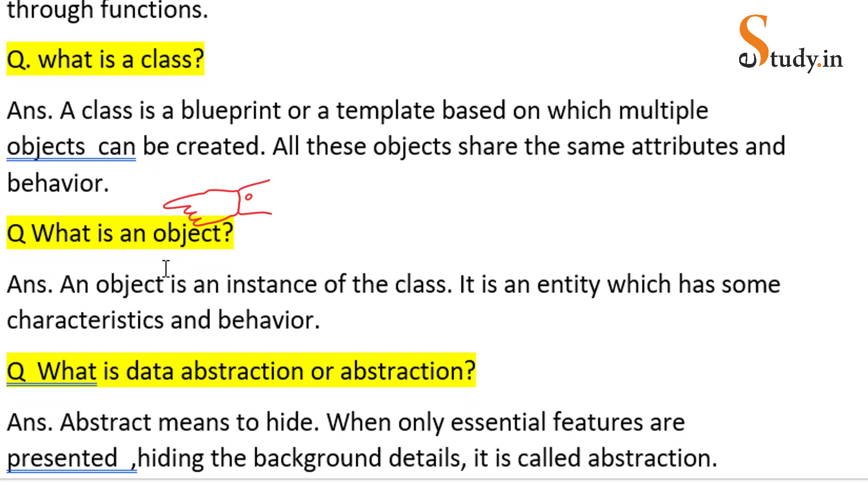What is an object? An object is an instance of the class. It is an entity which has some characteristics or properties and behavior.